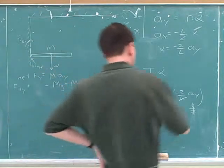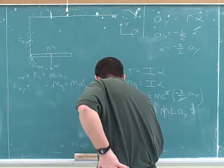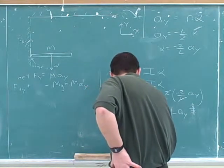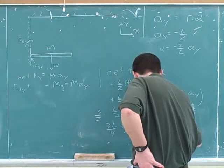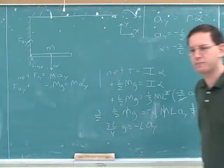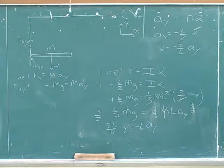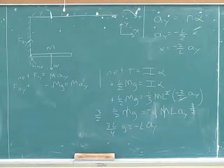Maybe that wasn't the problem then. So the three halves we're going to cancel. And over here we get 3L per 4, G equals negative AL sub Y. Is this what you ended up with? I'm going to have a variable.